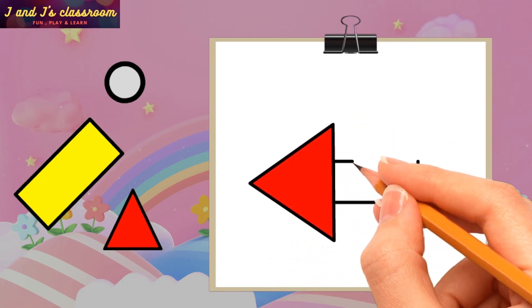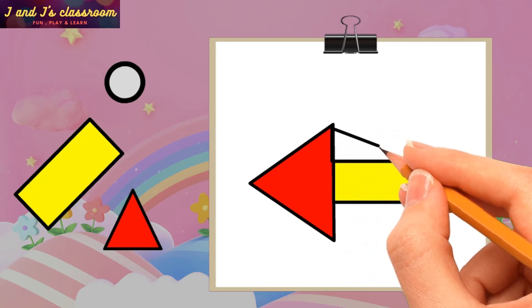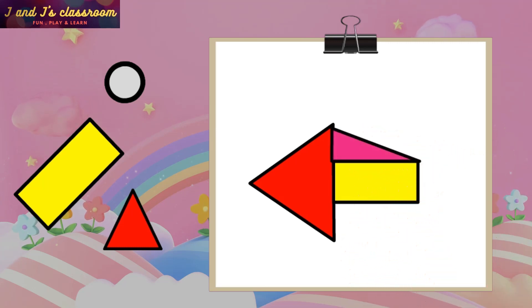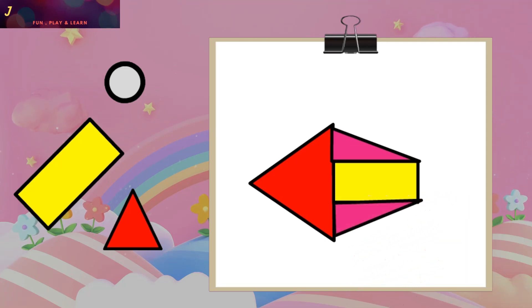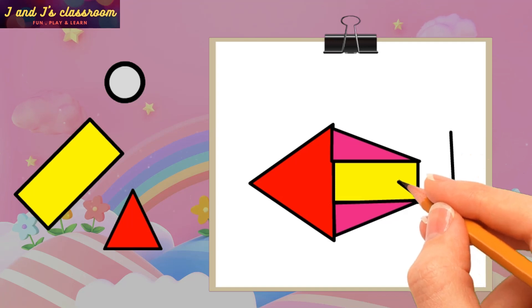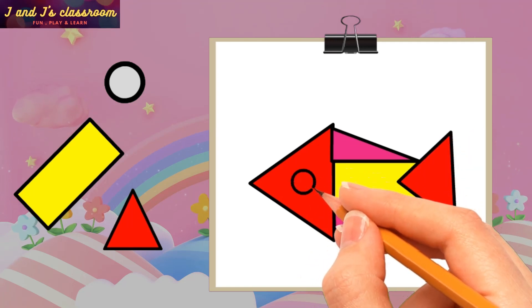Next, draw a rectangle from the base of the triangle. Then draw two triangles on both parallel sides of the rectangle like fish fins. And on the other side of the rectangle, draw one more triangle for the fish tail. Now, draw a circle for the fish eye.